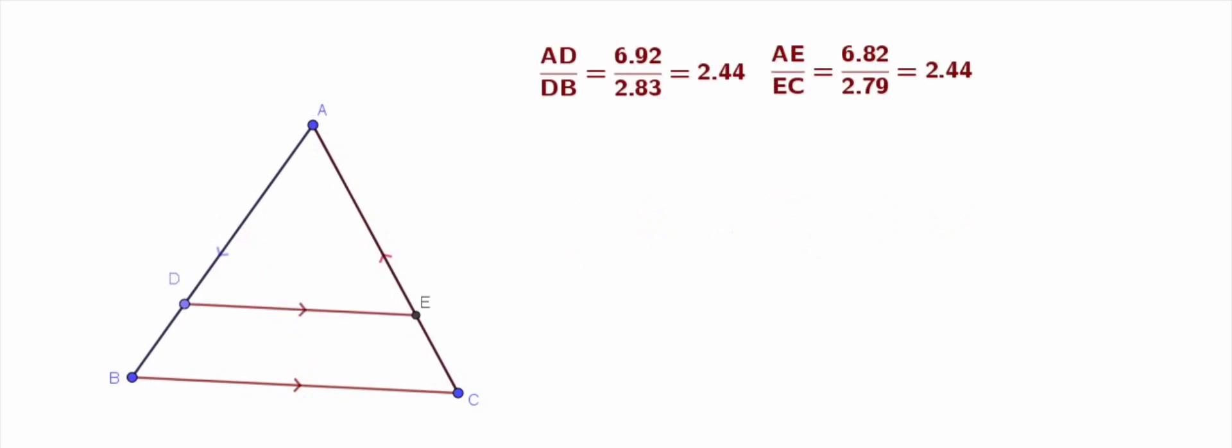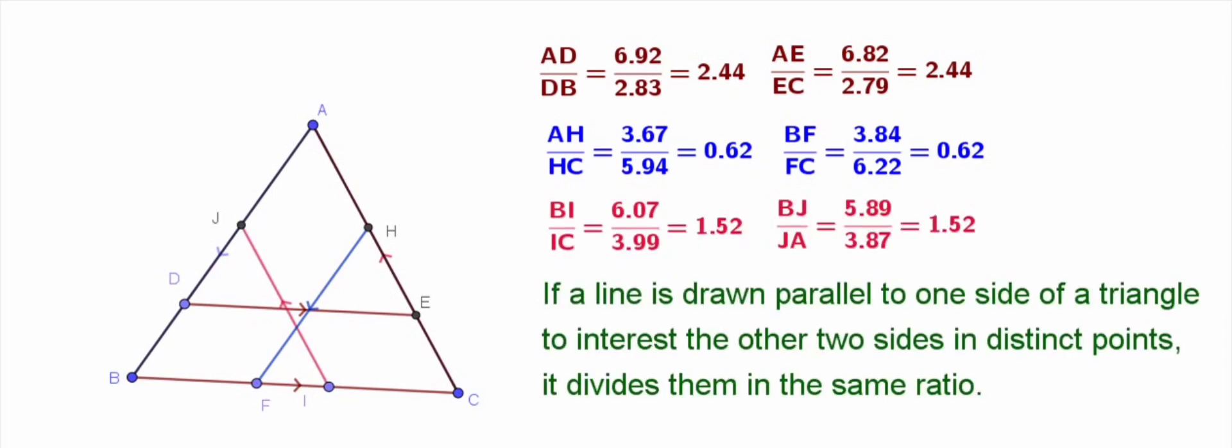So we can conclude that if a line is drawn parallel to one side of a triangle, it divides the other two sides in the same ratio.